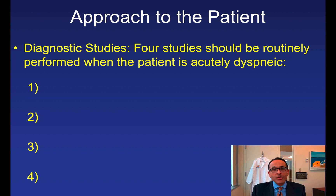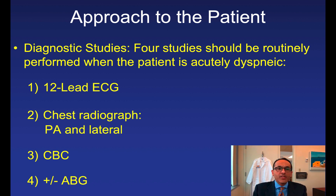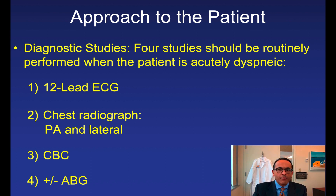Four diagnostic studies to perform on almost every acutely dyspneic patient — at least the first three; the last is plus or minus. These are: the 12-lead EKG; chest radiograph, ideally PA and lateral; CBC looking for anemia or evidence of sepsis; and plus or minus a blood gas, though many clinicians use pulse oximetry instead.